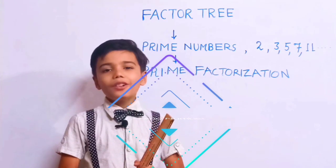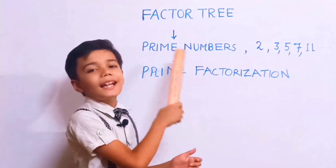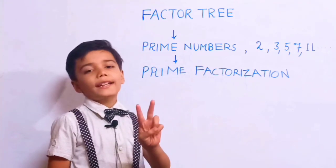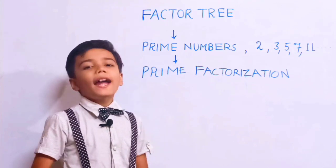Prime numbers are the numbers which have exactly two factors: one and itself.